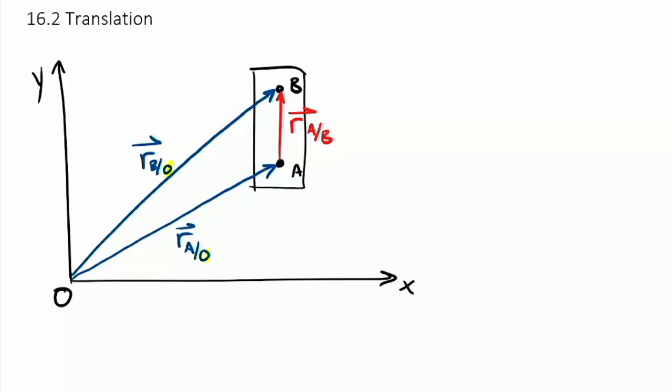One technique that I hope you're picking up through the semester is the ability to take a look at this vector triangle and basically write a corresponding equation to this vector triangle. So one thing we'll notice is that we add together R of A relative to O plus R of A relative to B. These are both vectors.